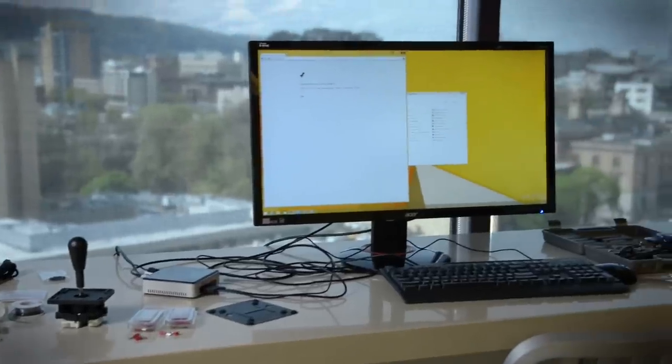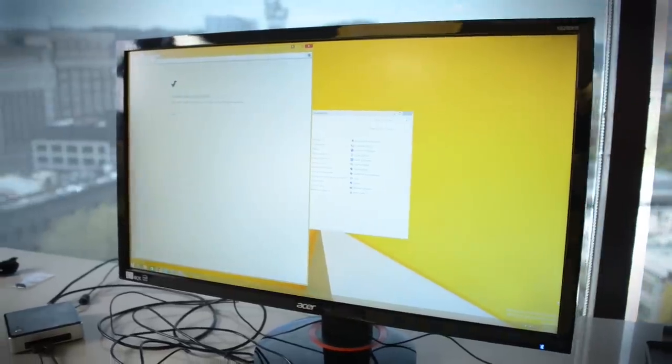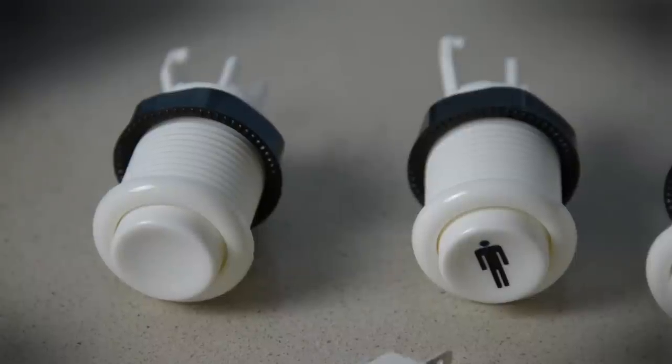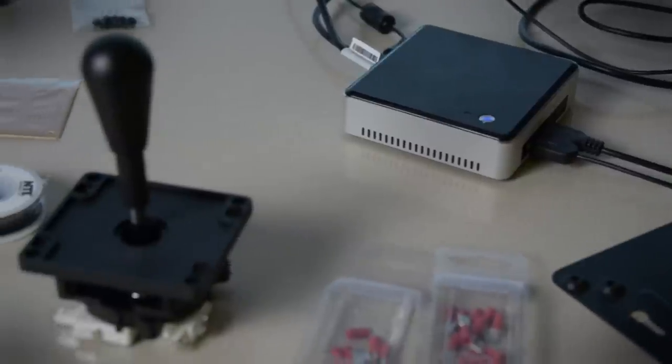Step one is to gather up all the parts you'll need for the console. We started with the Intel NUC as the heart of our system, paired up with an Acer 4K monitor. We went through a few design iterations before deciding on real arcade buttons and joysticks for a true two-player arcade experience.